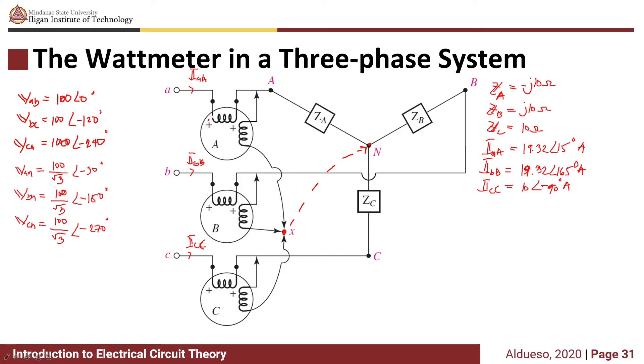Now we can calculate the power measured by each wattmeter. For wattmeter A, we have VP times IAA (the magnitudes) times cosine of the angle of VP minus the angle of IAA, which equals 208.7 watts.